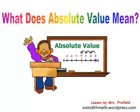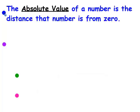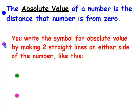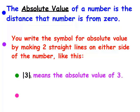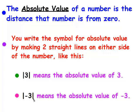Hi, this is Mrs. Freyfeld, and I want to help you understand what absolute value means. The absolute value of a number is the distance that number is from zero. You write the symbol for absolute value by making two straight lines on either side of the number, like this. These are the two straight lines, and that means what's the absolute value of 3? These two straight lines symbolize the absolute value of negative 3.